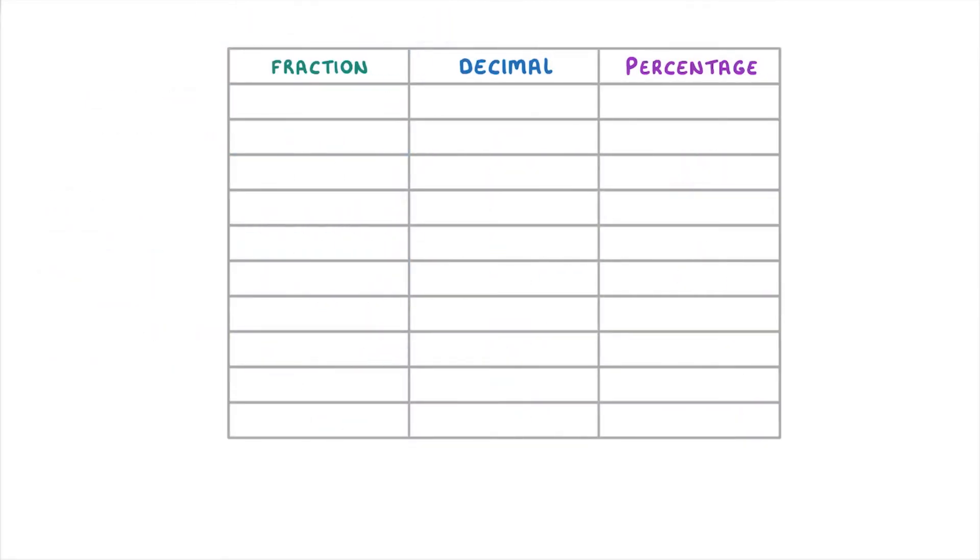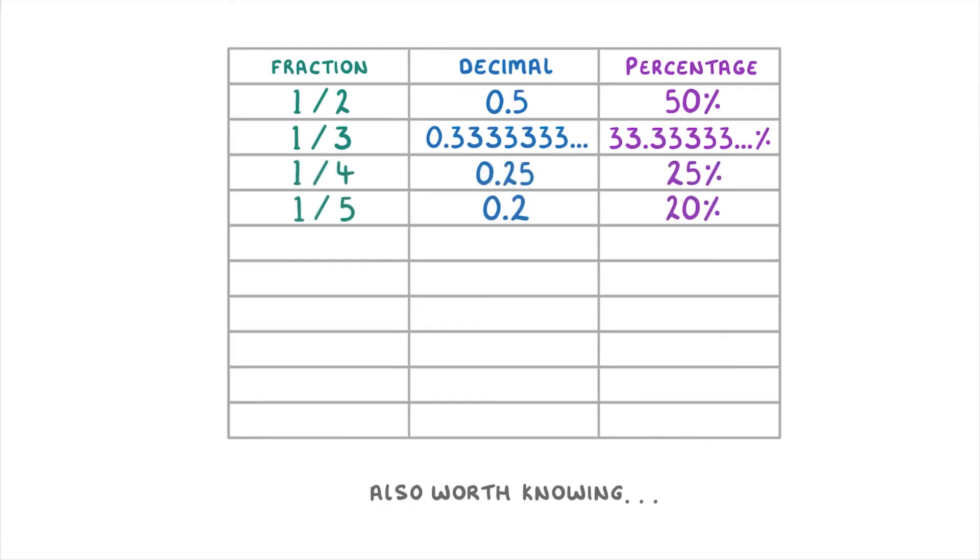We're not going to go through all of them one by one. But just so that you've seen them all, it's also worth knowing 1 half, 1 third, 1 quarter, 1 fifth, and 1 eighth. And if you know all of these, then you can generally work out most of the other ones that you might need.